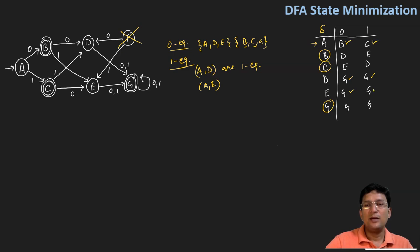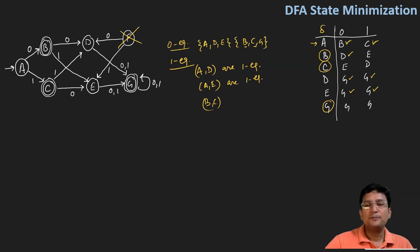The set did not change in this one equivalence. Now let's check A and E — they are also one equivalent, so the set did not change. Now let's take the pair B and C. B on zero goes to D and C on zero goes to E, and D and E belong to the same set. B and C on one go to E and D respectively, and E and D also belong to the same set. Hence, B and C are one equivalent.